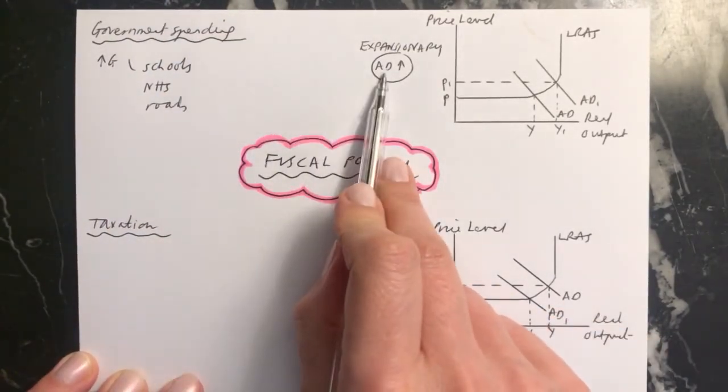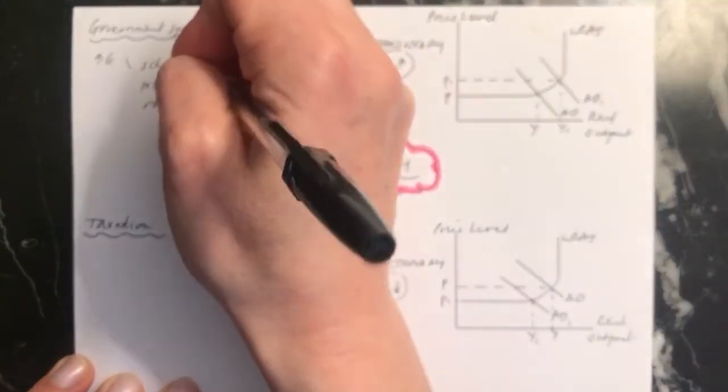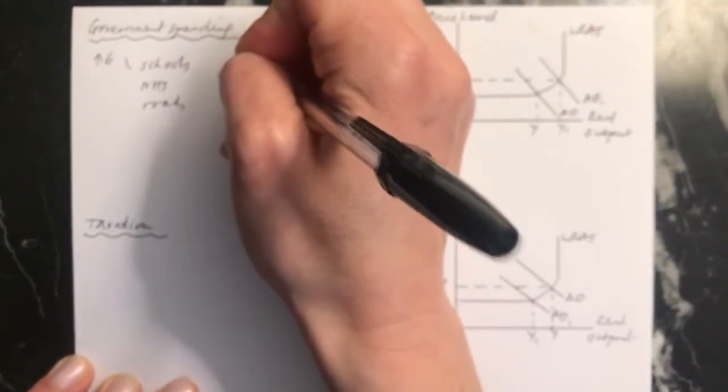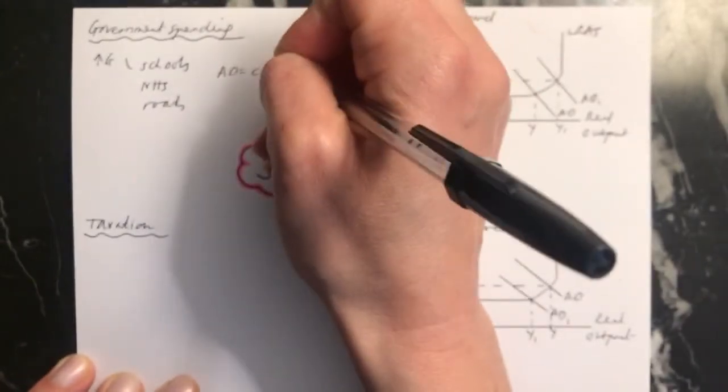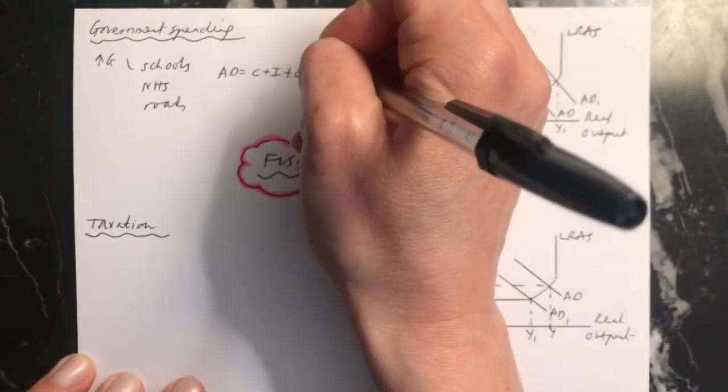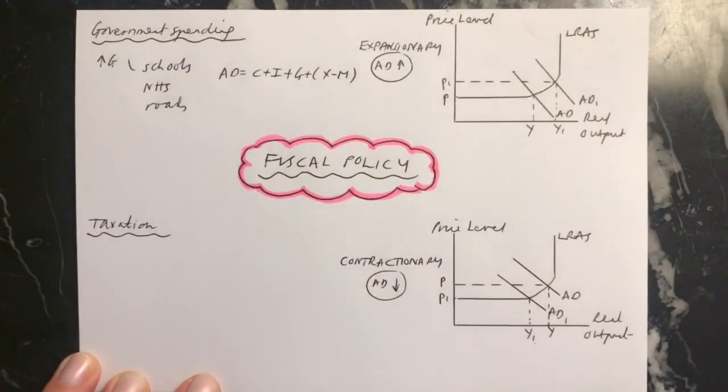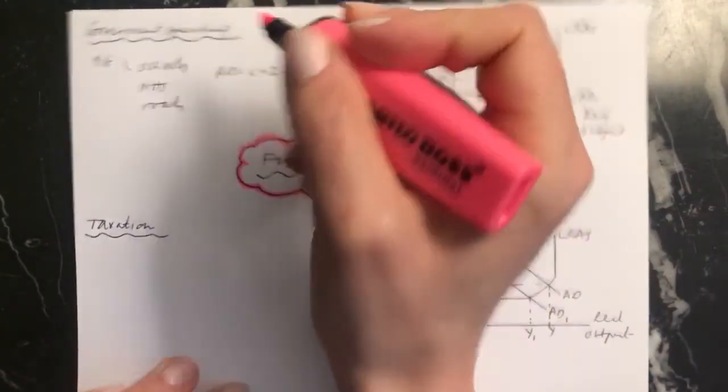this causes aggregate demand to go up. Because, remember, aggregate demand is consumption plus investment plus government spending plus exports minus imports, net exports. So, therefore, if you increase government spending,